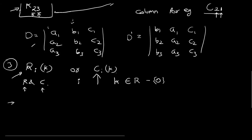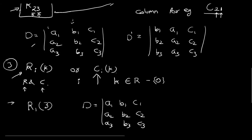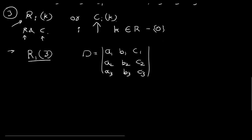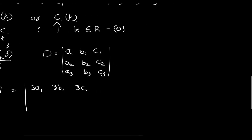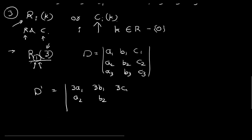Let us take an example. Let us perform the operation r1,3 on determinant d with elements a1, b1, c1, a2, b2, c2, a3, b3, c3, where 1 is our i-th row and 3 is the value for k. When we perform this operation, we are multiplying the value 3 with all the elements of row 1. So our new elements for row 1 will be 3a1, 3b1, 3c1, and the rest of the elements of the determinant remain the same.